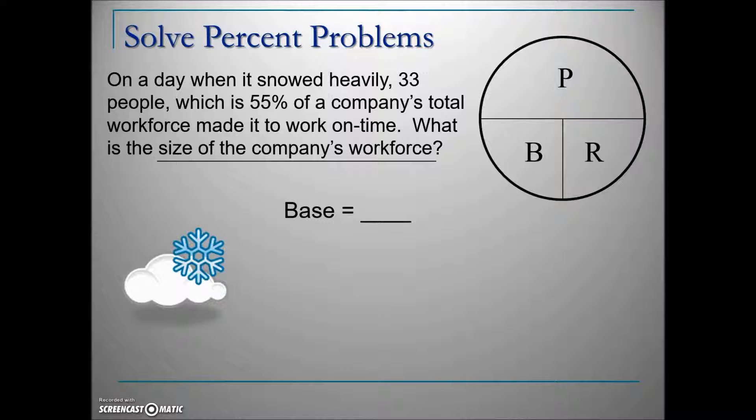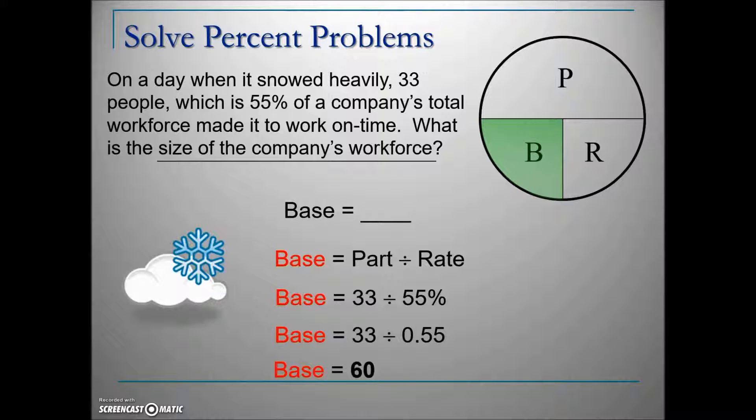Cover up base in this circle—it leaves part over rate, meaning part divided by rate. The part is 33. Our rate is 55%. Convert the percentage to a decimal for easier calculating, then divide. The size of this company is 60.